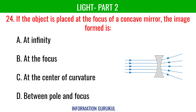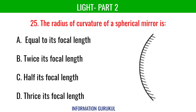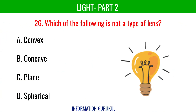If the object is placed at the focus of a concave mirror, the image formed is at infinity. The radius of curvature of a spherical mirror is twice its focal length. Which of the following is not a type of lens? Plain.